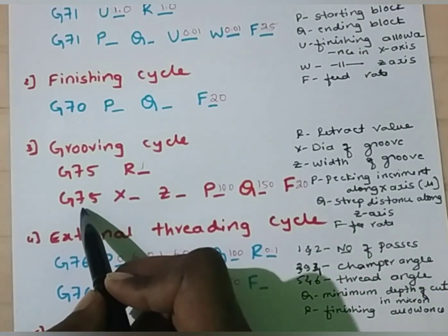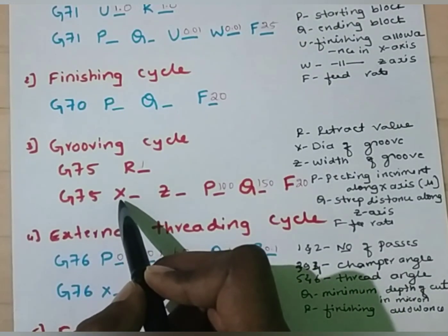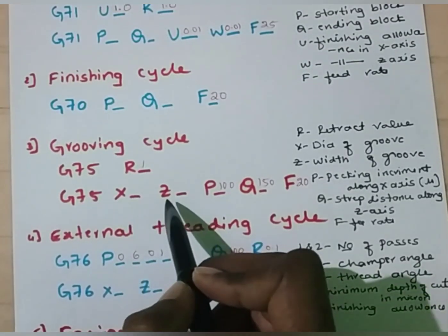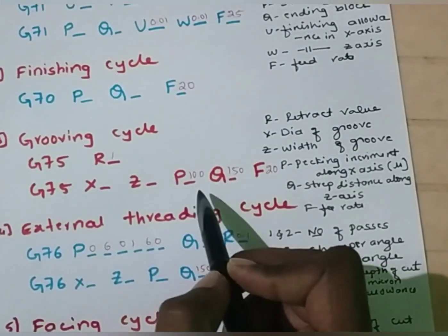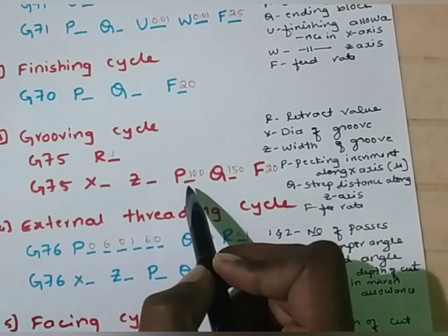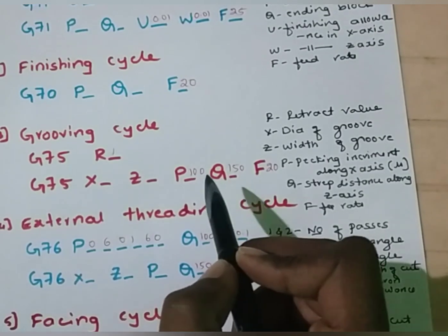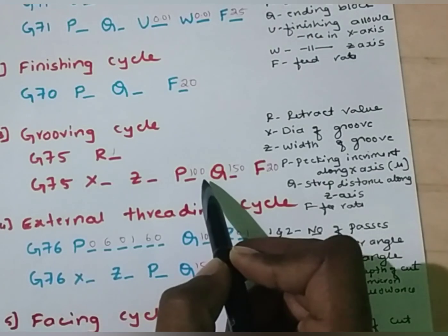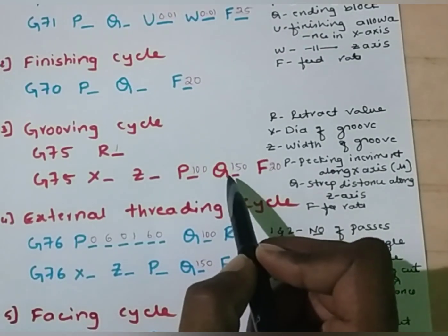In the second line, again G75 is the grooving cycle. X is diameter of groove — by looking at the geometry given, we can determine the value of X. Z is the width of the groove; again by geometry we can determine the value of Z. P is pecking increment along X-axis and Q is the stepping distance along Z-axis. Both P-value and Q-value should be substituted in microns. I am going to assume P-value as 100 microns and Q-value as 150 microns.